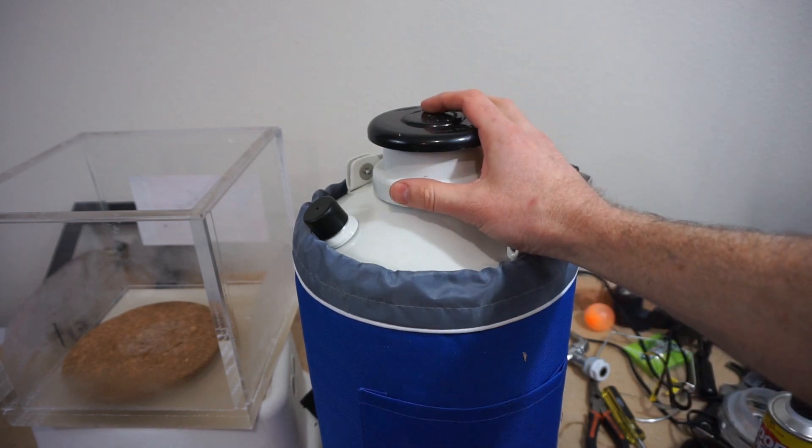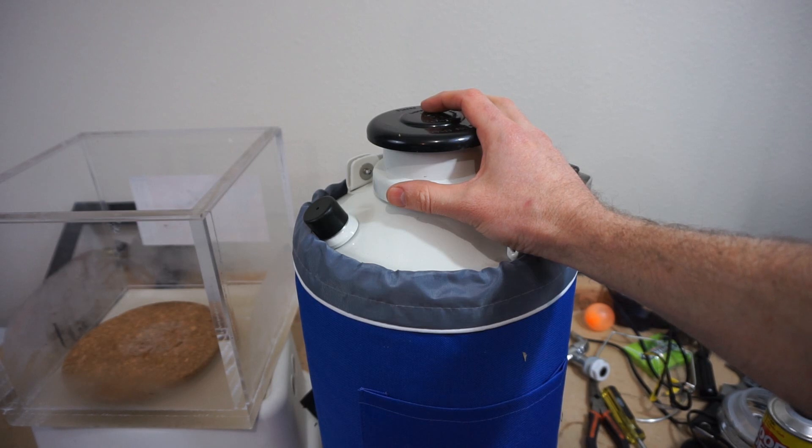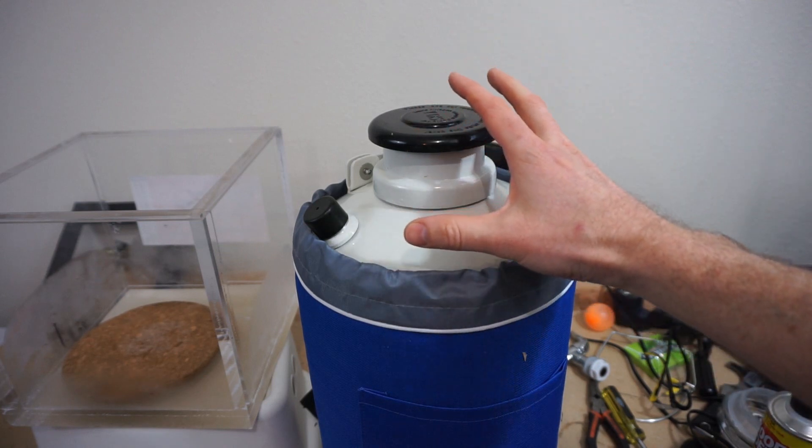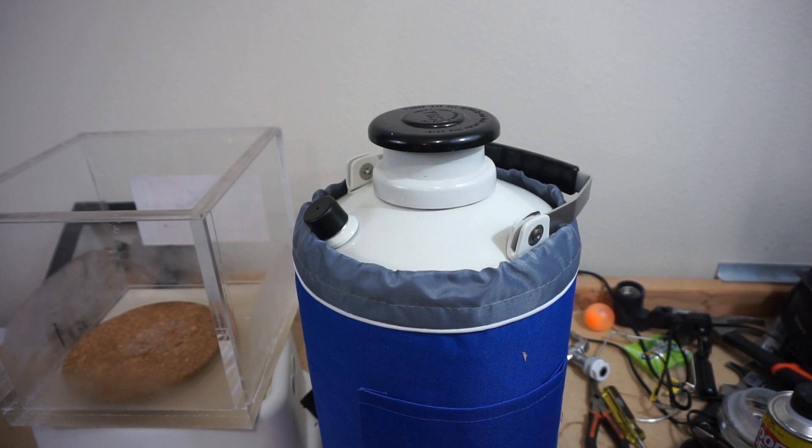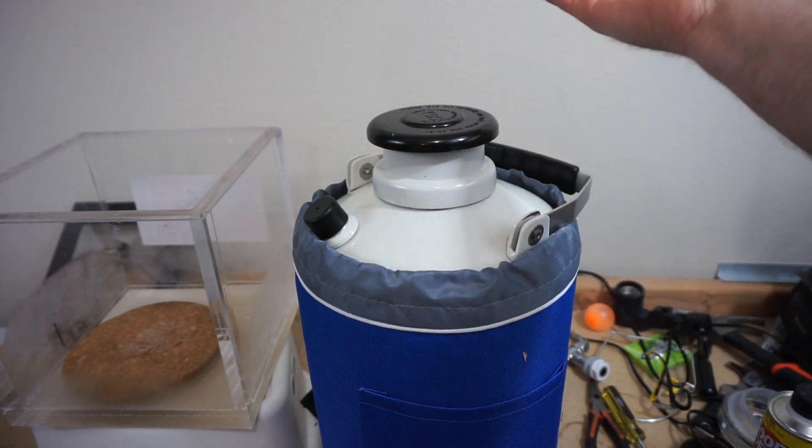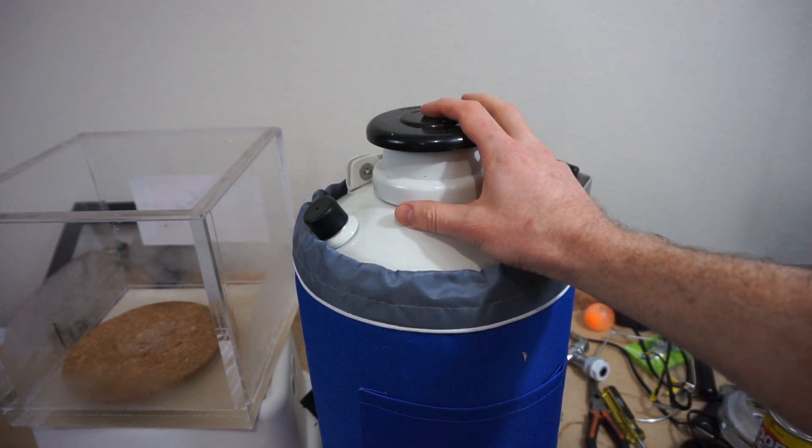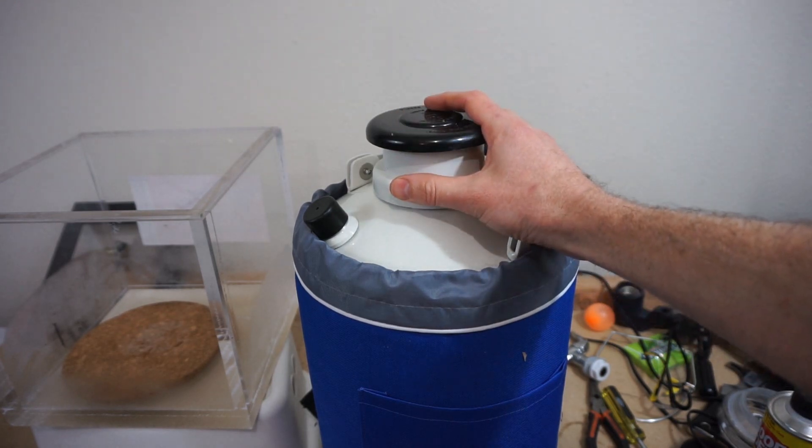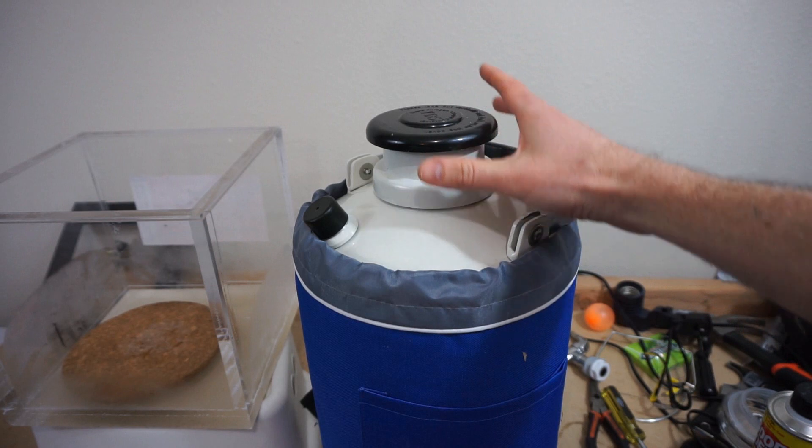So if you don't know already, liquid nitrogen boils at around negative 196 Celsius. So since it boils at that temperature, that means the liquid continually stays at negative 196 Celsius. It doesn't warm up, it just boils. So it's used to store things at cryogenic temperatures because it stays at that constant temperature. It's usually stored in containers like this Dewar here.